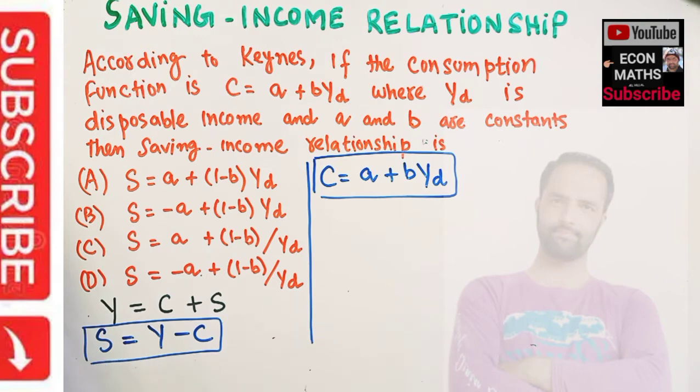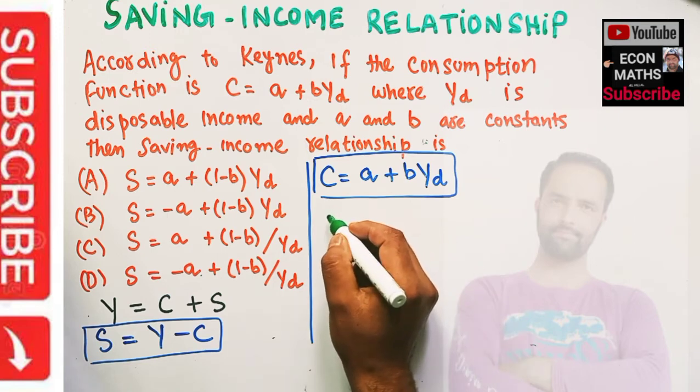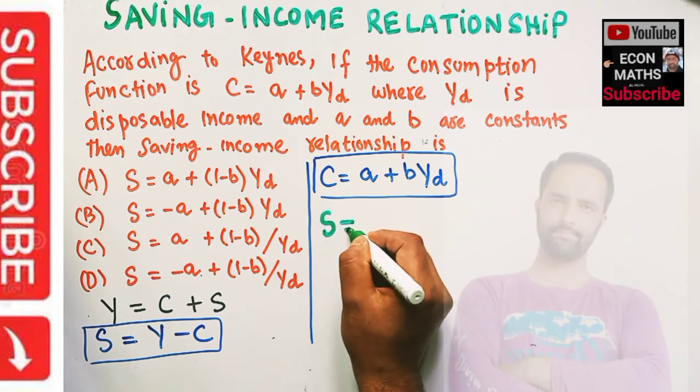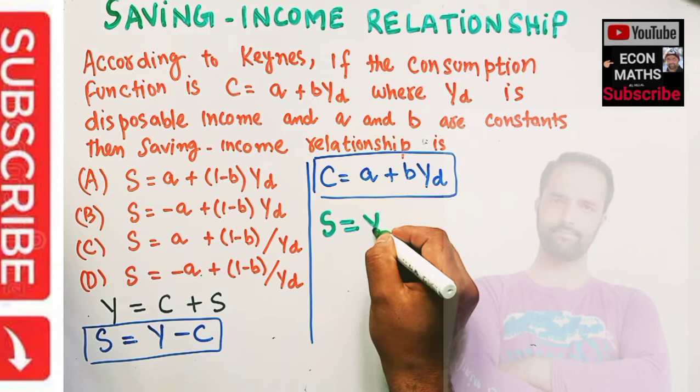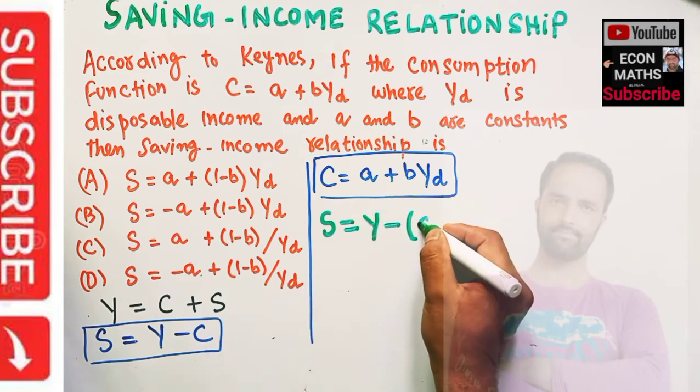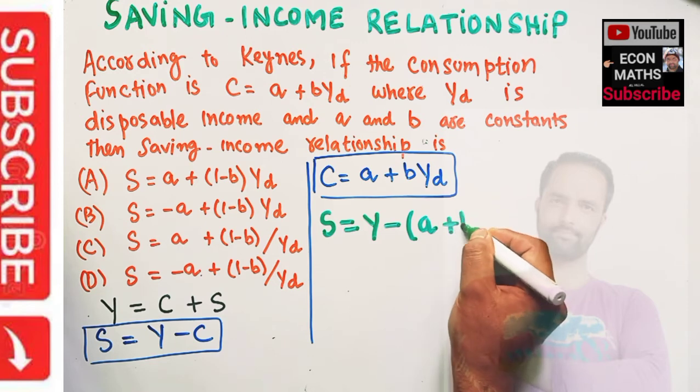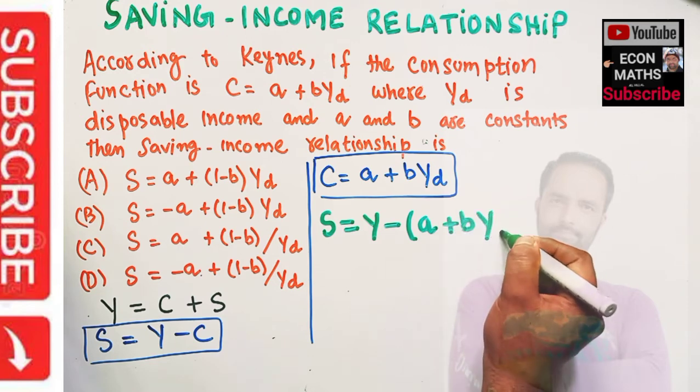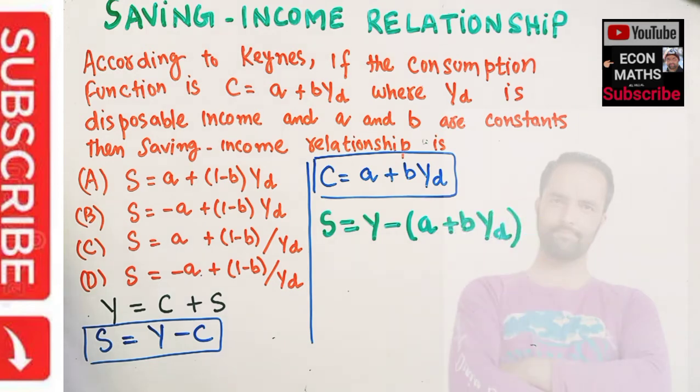That means our income or savings will be equal to Y minus, in place of C, we have this relationship: A + B*Y_D.